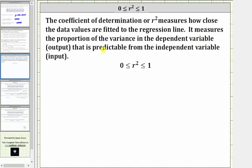It measures the proportion of the variance in the dependent variable, or the output, which is y, that is predictable from the independent variable, or the input, which is x. And again, r squared is always in the interval from zero to one. I hope you found this helpful.